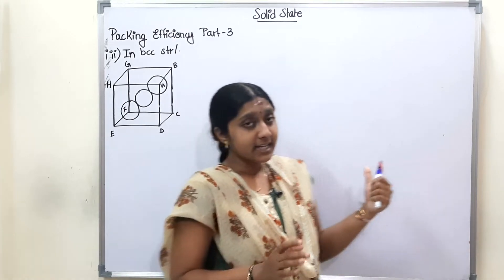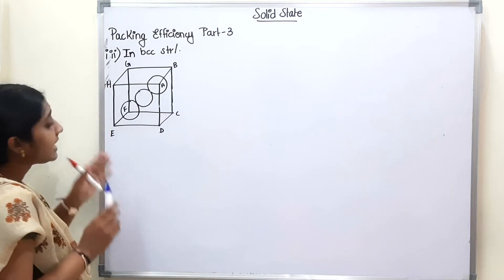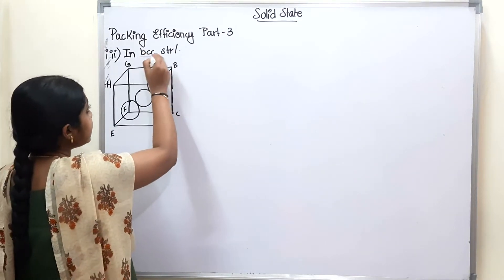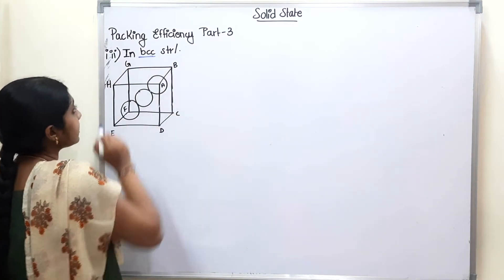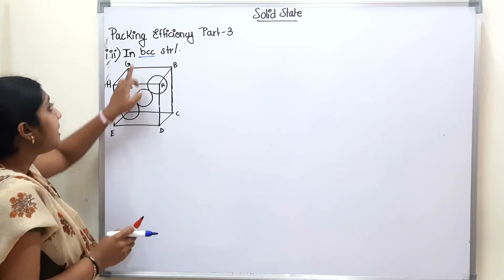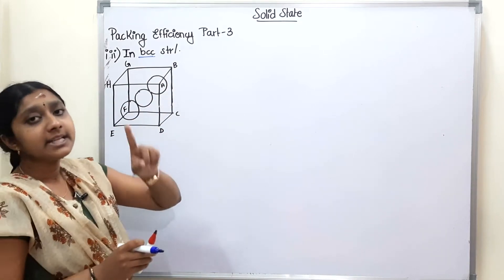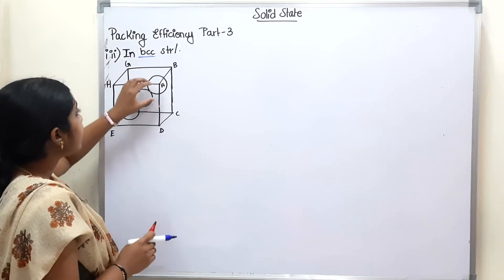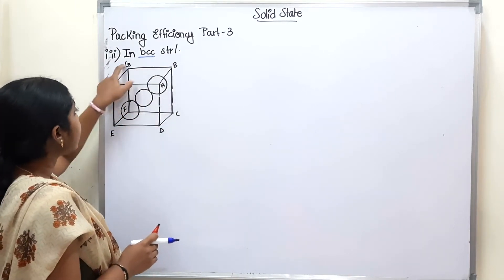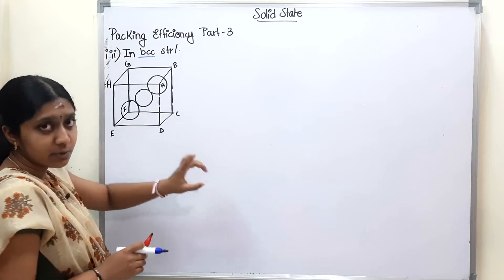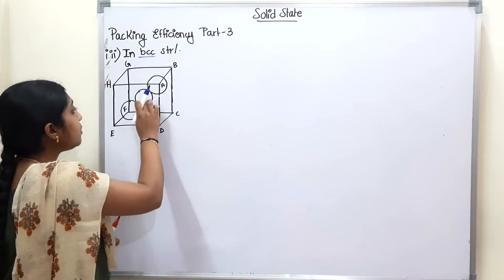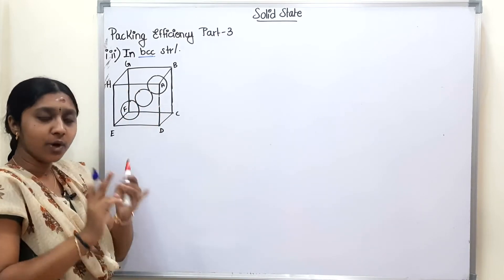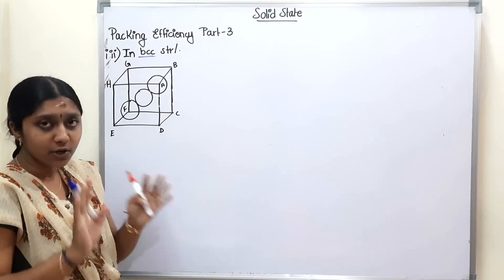So let's start. First, let's look at BCC Structure. BCC is Body-Centered Cubic Structure. There are 8 atoms at the corners and one atom at the center of the cube. Let's start with the first concept.